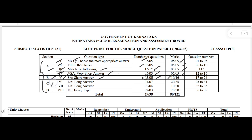Next, in Part C, you are going to get the sixth main and seventh main. The sixth main belongs to LA type questions — long answers. Here totally seven questions are there; out of seven you have to answer any four. Four into five equals 20 marks — in the sixth main you get five mark type problems. In the seventh main, also LA long answers, there are four questions; out of four you have to answer any two. Here also five mark questions — five into two equals ten marks.